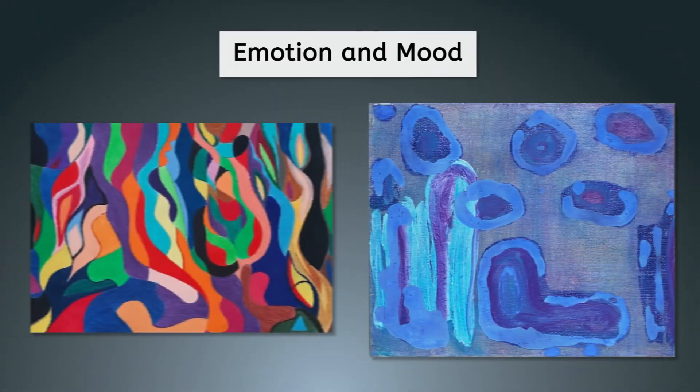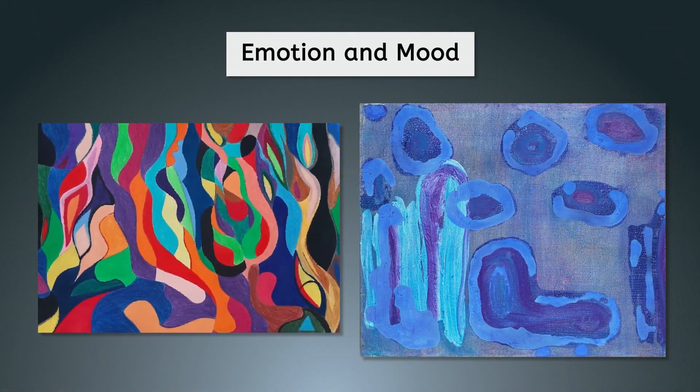Emotion and mood. Organic shapes can be used to create a sense of emotion and mood in a piece of art. Looking at these two paintings, which one conveys a sense of calm to you, and which one exudes a sense of energy? Why do you think that is?